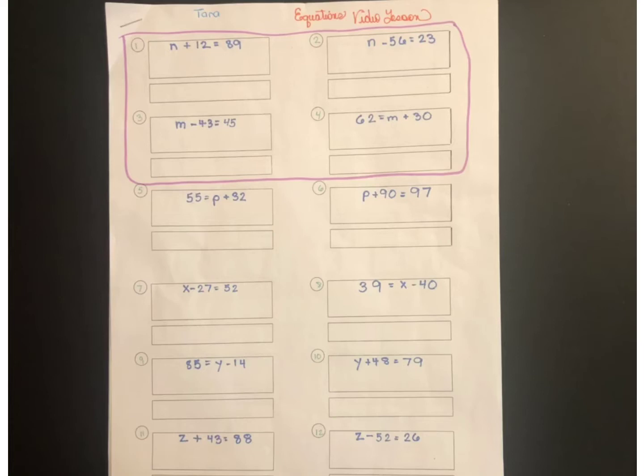For example, any time you are adding a number to the variable, you'll simply subtract it to get rid of it. If you're subtracting a number from the variable, then you will add it to get rid of it. In so doing, you'll get the variable all by itself.